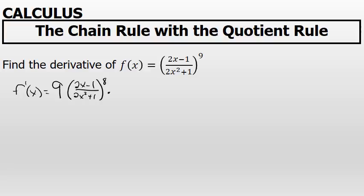But then, and this is where the majority of the work of this problem comes in, I have to multiply by the derivative of the inside of the quantity, which in this case is a quotient. So the quotient rule will have to be applied to find this derivative.